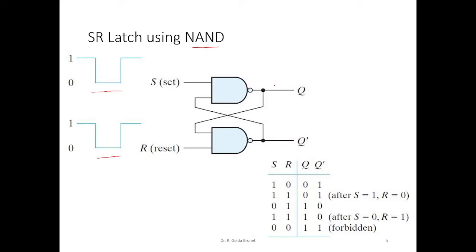Let us assume that Q is 1 initially, and therefore Q bar is 0. Now let us try to reset the circuit. Since the circuit is set to 1, let us try to reset it. That means I have to say R is equal to 0 and S is equal to 1. In that case, this line is 1 and this 1 will come here, this 0 will go here, and we have a 0 here.